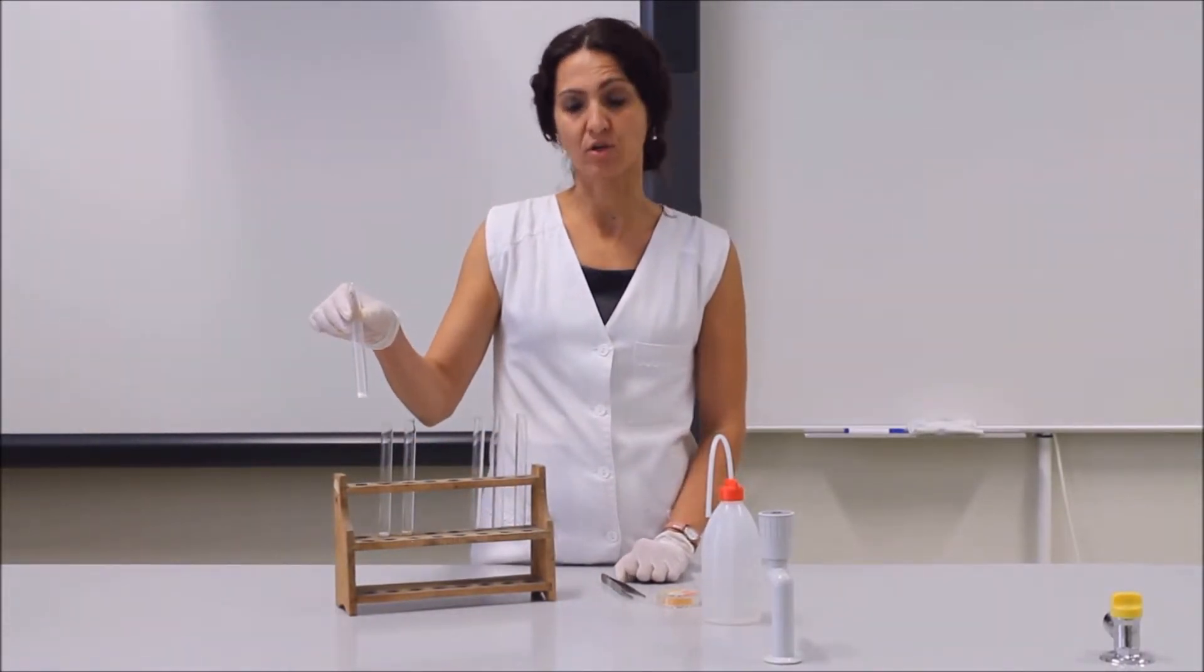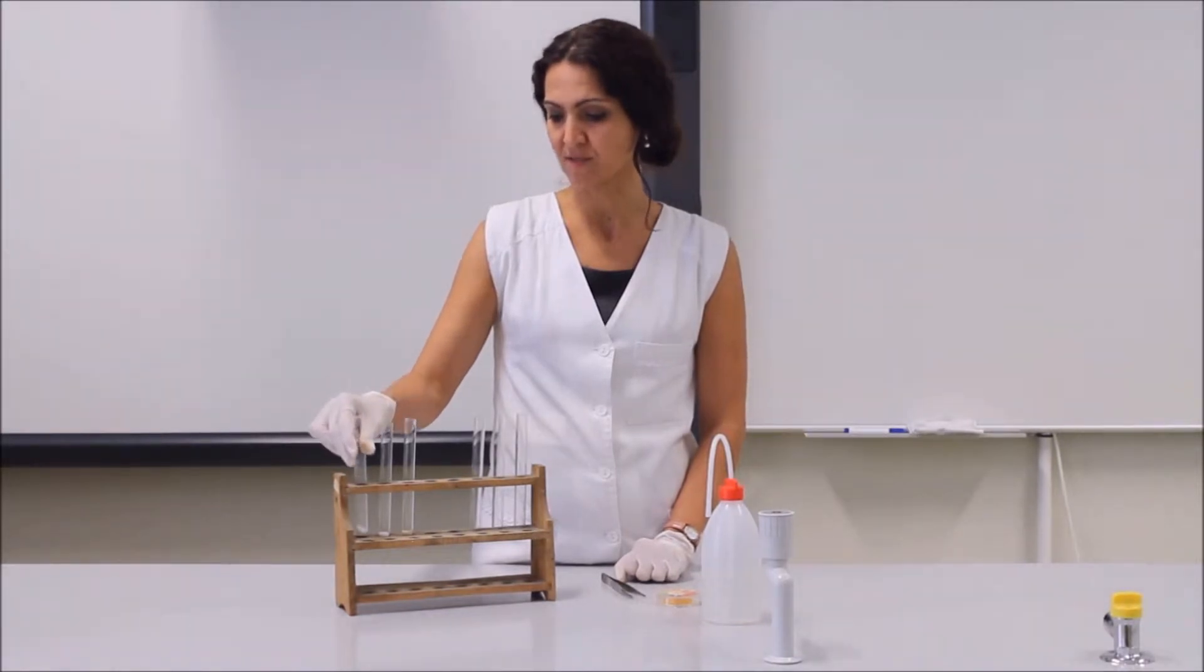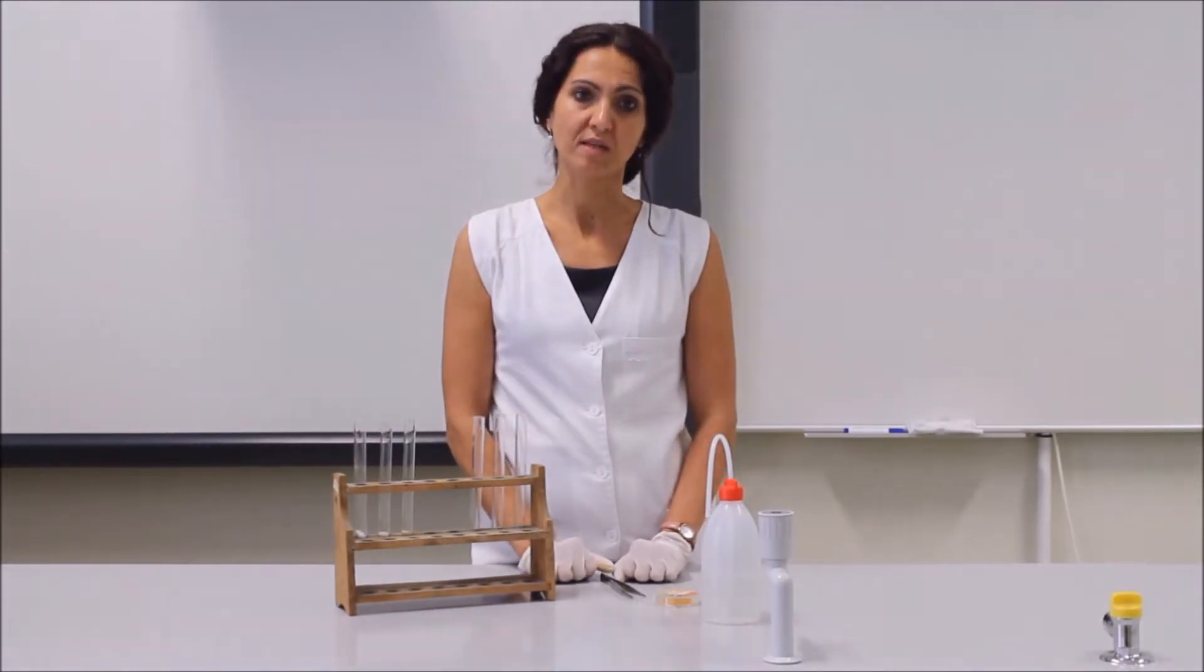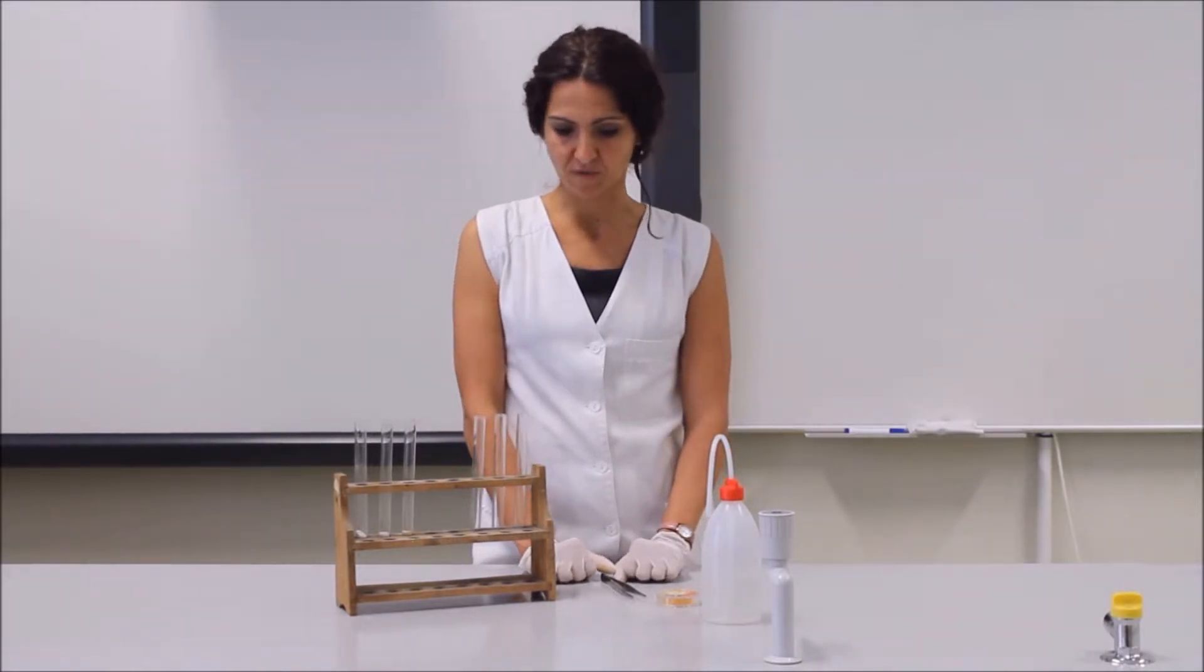In each test tube there is a white solid which could be one of the following: sodium acetate, glucose, and citric acid. The identification of these solids can be done using distilled water and pH paper.